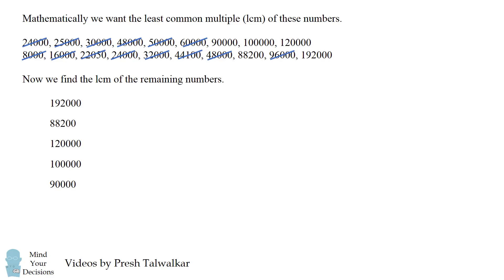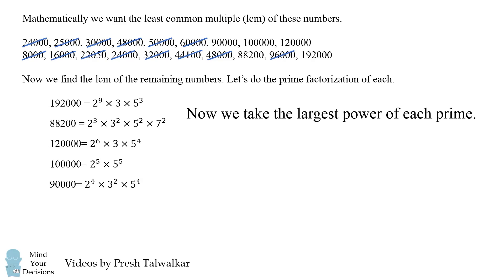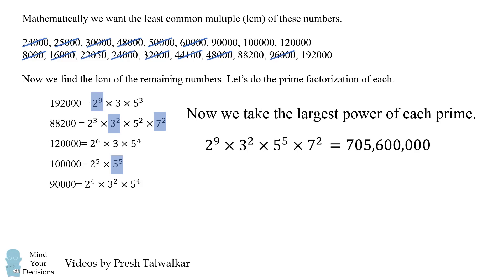One way to do that is by taking the prime factorization of each of these numbers. To find the least common multiple, we take the highest power of each prime in the list. So we have 2 to the power of 9, 3 squared, 5 to the power of 5, and 7 squared. We multiply each of these together to get the least common multiple, and the number we get is 705,600,000.